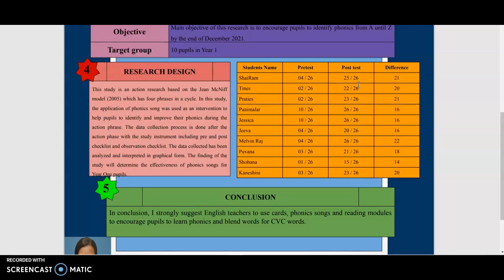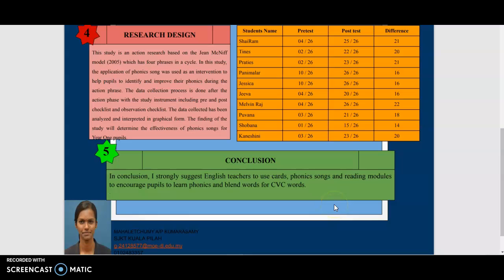At year-end school-based assessment, it also showed a positive increase among Year 1 pupils in English language. I am happy to say that in December I only had 3 pupils who were still in TP 1 and 2. The rest of the students involved in this action research got TP 3 and 4, where they were able to identify, recognize sounds, and blend words in English language.